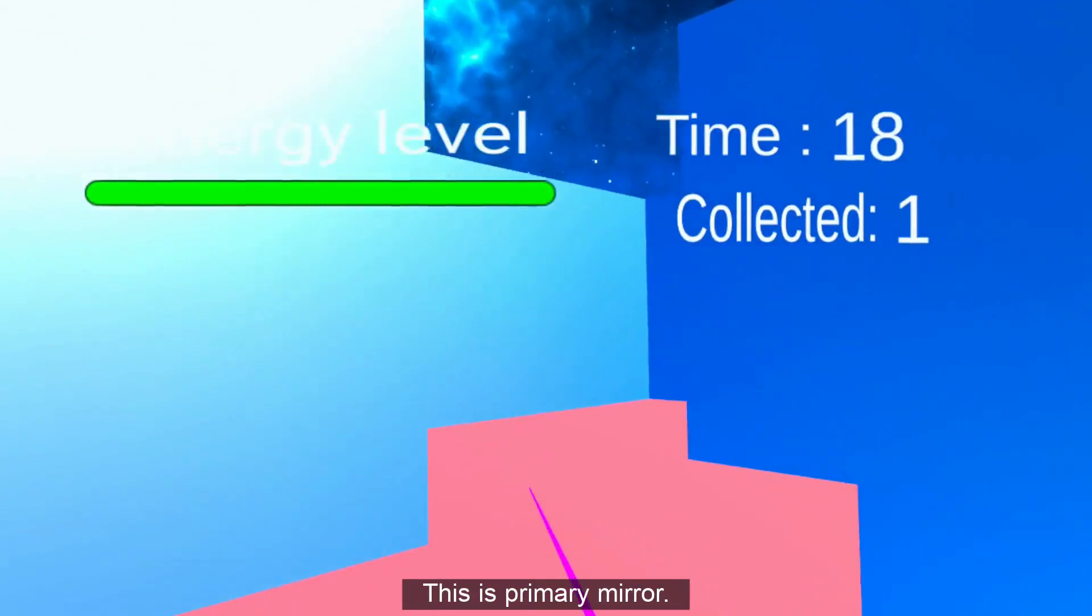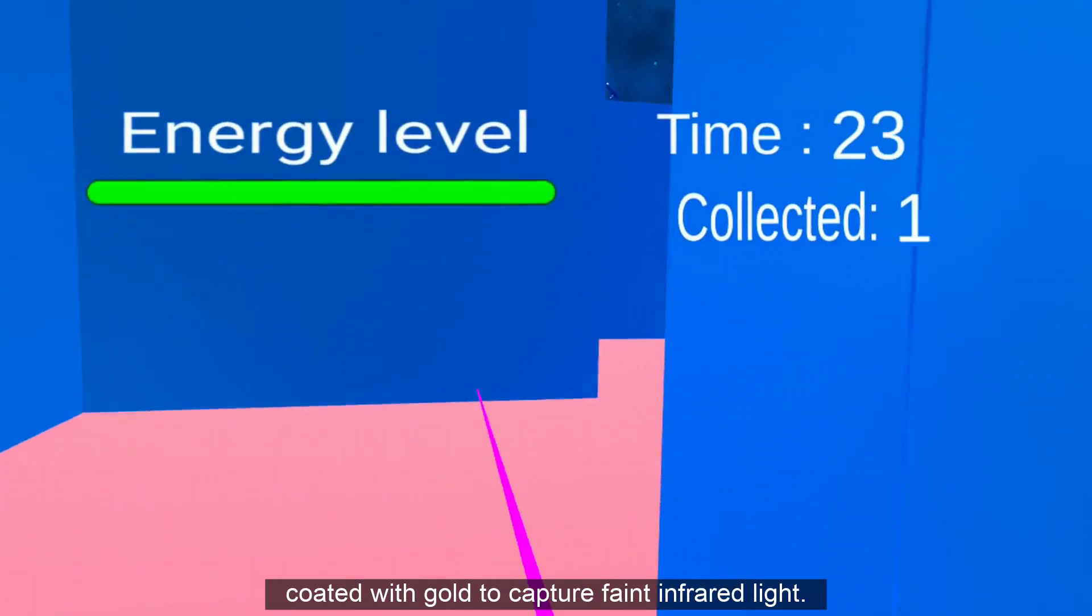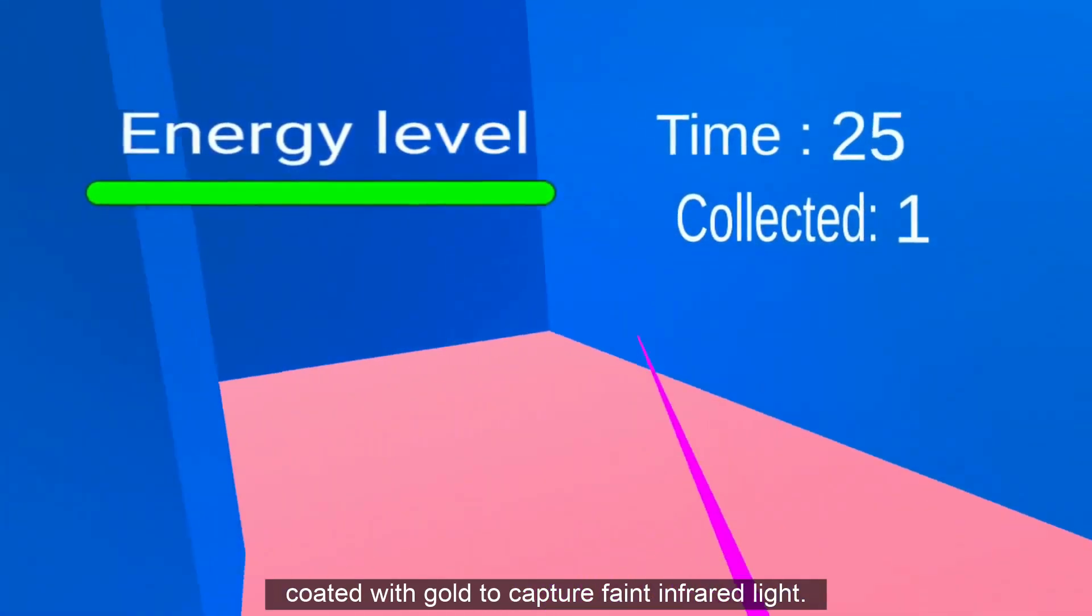Here you are. This is the Primary Mirror. It is 18 hexagonal segments made of the metal beryllium and coated with gold to capture faint infrared light.